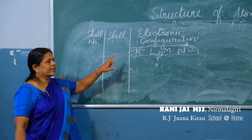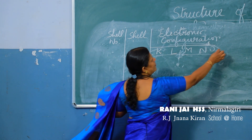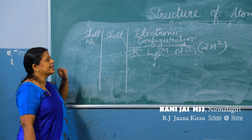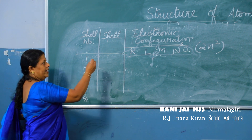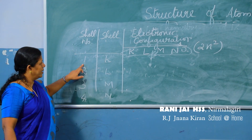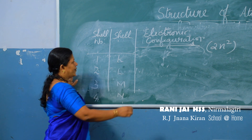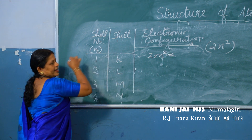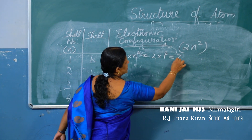Electrons are distributed in various shells using the general formula 2N², where N represents the shell number. For shell number 1 (K shell): 2 × 1² = 2 electrons. For shell number 2 (L shell): 2 × 2² = 8 electrons.